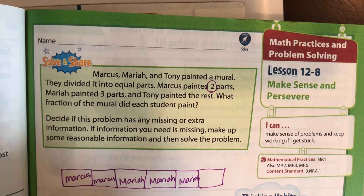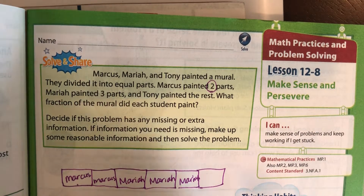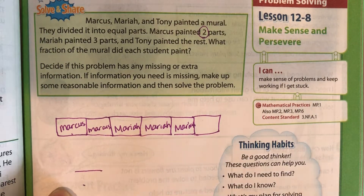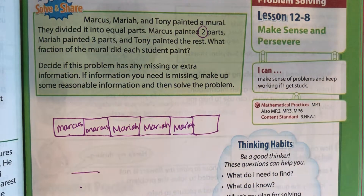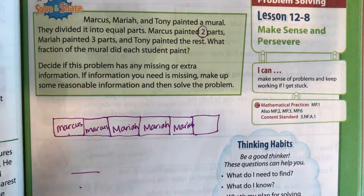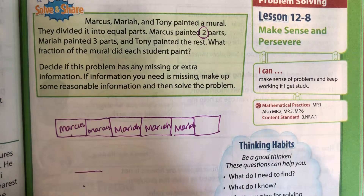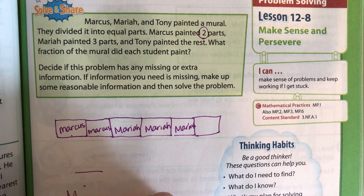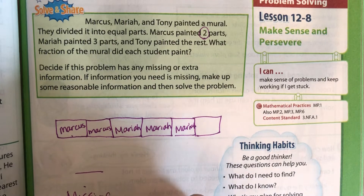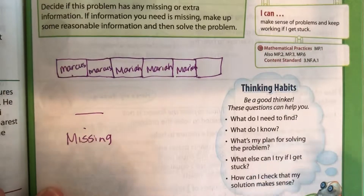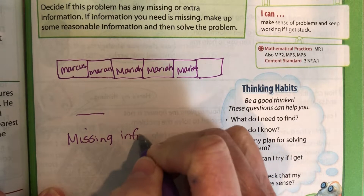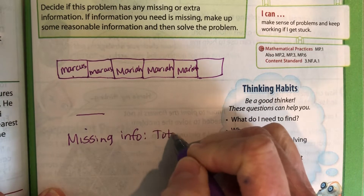We have to know what our denominator is. Our denominator is how many parts total you have, and we don't have that. So we do not have any way of being able to figure that out. Decide if this has any missing or extra information. We are missing information — missing info is total number of parts.